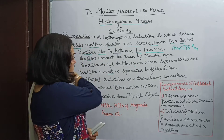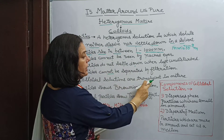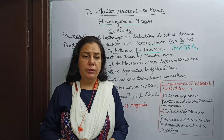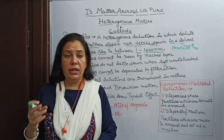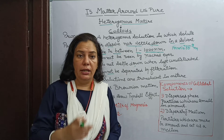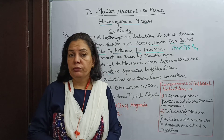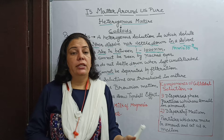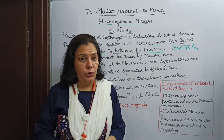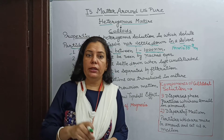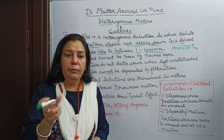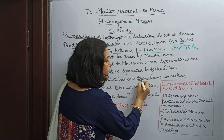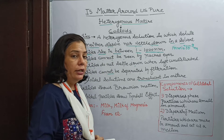Next: colloidal solutions are translucent in nature. If you are given a colloidal solution and asked whether it is transparent, opaque, or translucent — these solutions are not transparent. They are translucent, meaning neither opaque nor transparent. They have an intermediate property — they are translucent in nature.